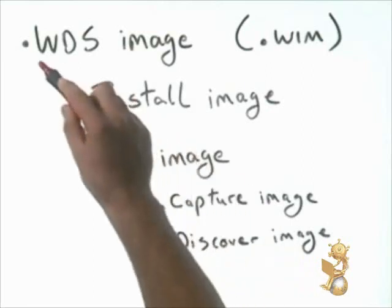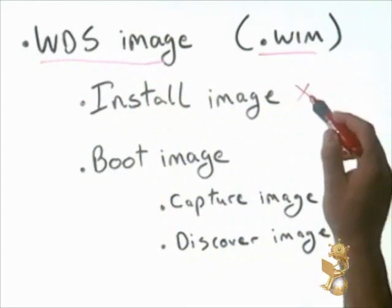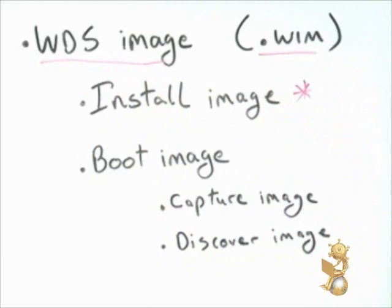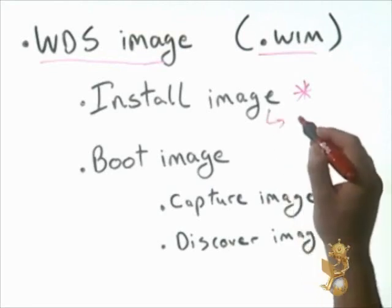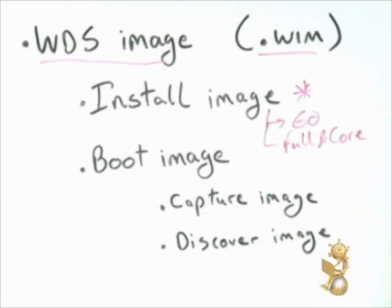There are many different types of WDS images. You can extract these images from either a downloadable media or a DVD or CD. A WDS image, which usually has the extension .wim, can be broken down into two types. First, you have the install image — an install image stores the operating system. Due to the image-based technology of Windows Server 2008 media, a single DVD stores all the different available editions of Windows within a single OS image, including full and core installations.